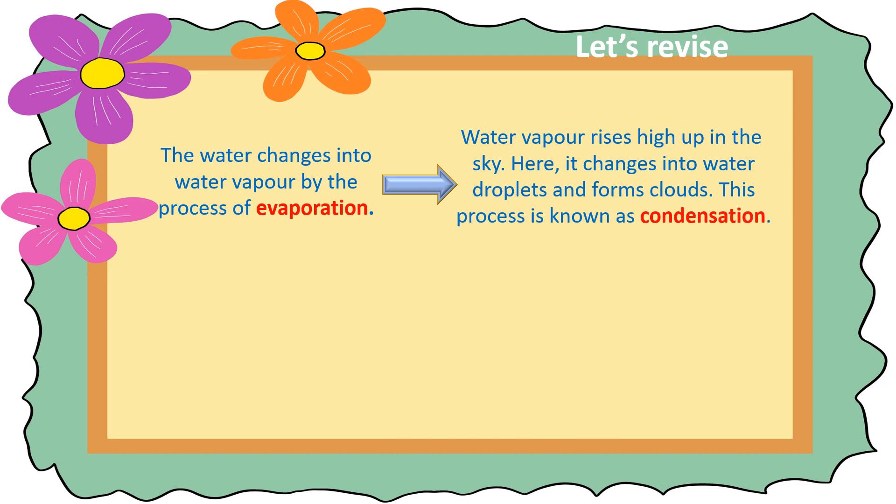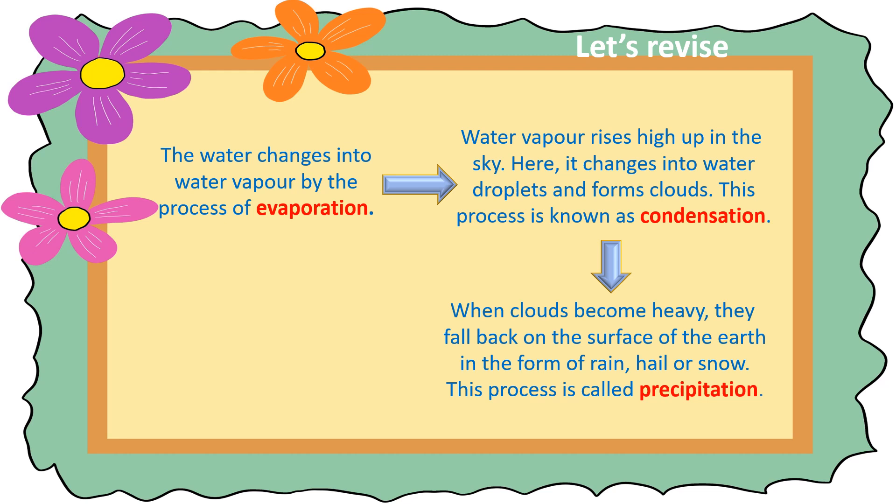When clouds become heavy, they fall back on the surface of the earth in the form of rain, hail, or snow. This process is called precipitation. This water cycle repeats and continues.